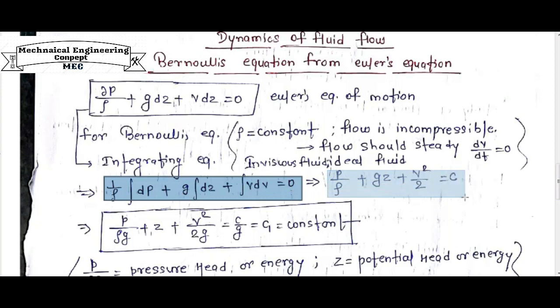After integrating this equation, we get this equation as resultant: P by rho plus gz plus v square upon 2 is equal to constant.